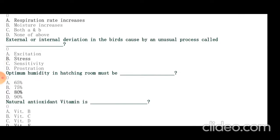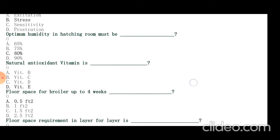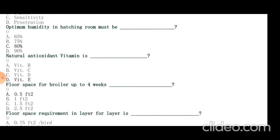Optimum humidity in hatching room must be 80%. Natural antioxidant is vitamin E. There are two antioxidants: selenium and vitamin E. They are available commercially as salivate but vitamin E is also produced naturally. Floor space for broiler up to 4 weeks is 0.5 feet square. After 4 weeks, it requires 1 feet square. For cattle and buffalo, cattle requires 4.5 meter square and buffalo requires 5 meter square.